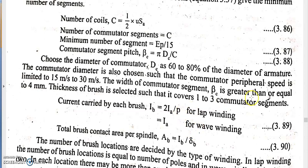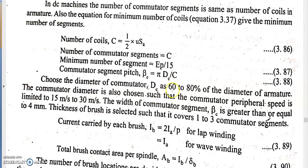The commutator segment pitch should be greater than or equal to 4 mm. That is the final objective in the design of the commutator. After calculating all parameters, the commutator segment pitch must satisfy this constraint. If it is not satisfied, the design procedure is revised and the segment pitch is recalculated.